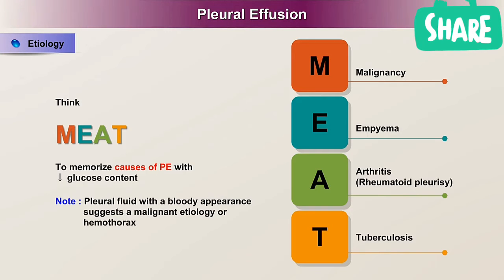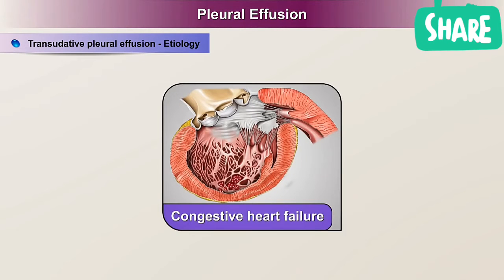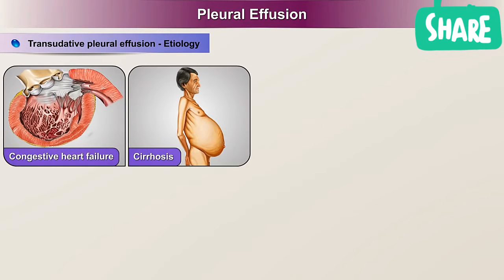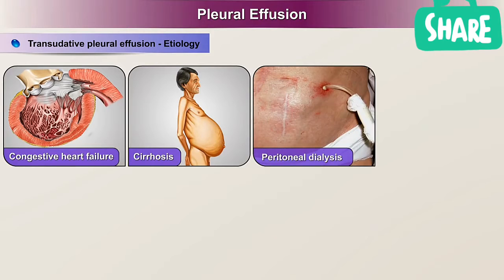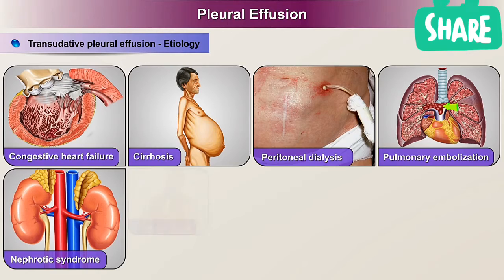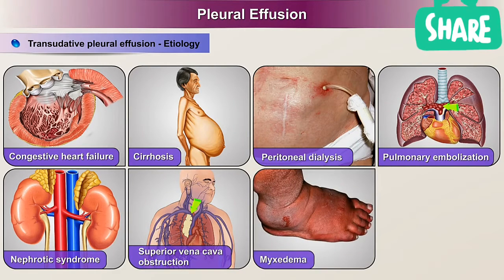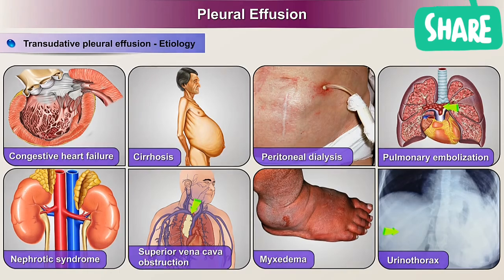Note that pleural fluid with a bloody appearance suggests a malignant etiology or hemothorax. Causes of transudative pleural effusion include: congestive heart failure, cirrhosis, peritoneal dialysis, pulmonary embolization, nephrotic syndrome, superior vena cava obstruction, myxedema, and urinothorax.